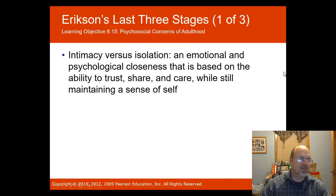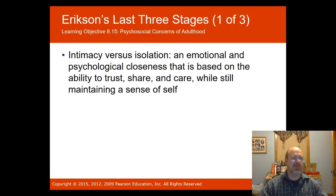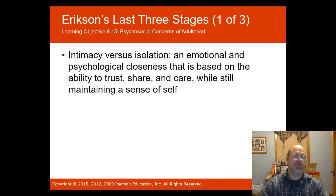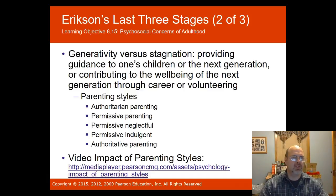The sixth Erikson stage is intimacy versus isolation, where the young adult deals with emotional and psychological closeness — the ability to trust, share, and care while still not losing themselves. The seventh stage is generativity versus stagnation, which involves providing guidance to one's children or the next generation and contributing to the well-being of future generations.